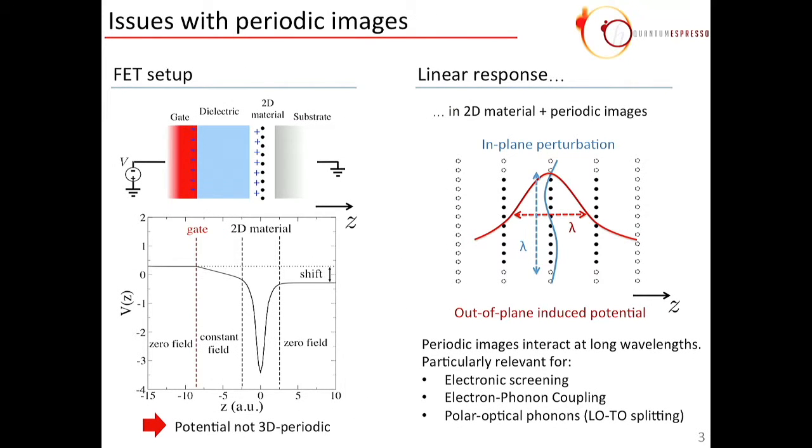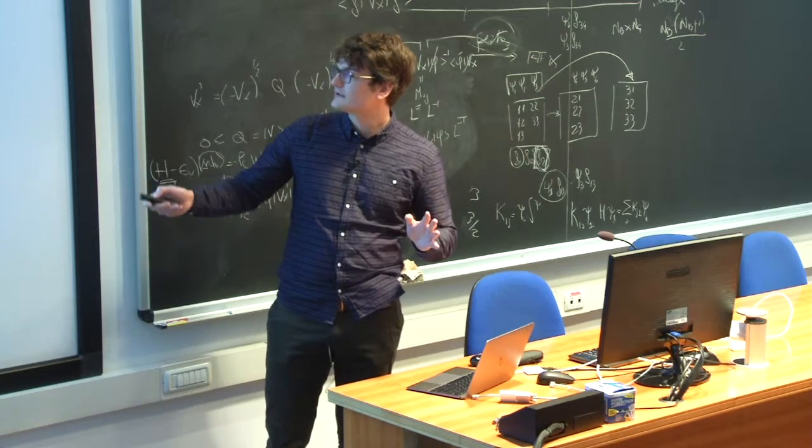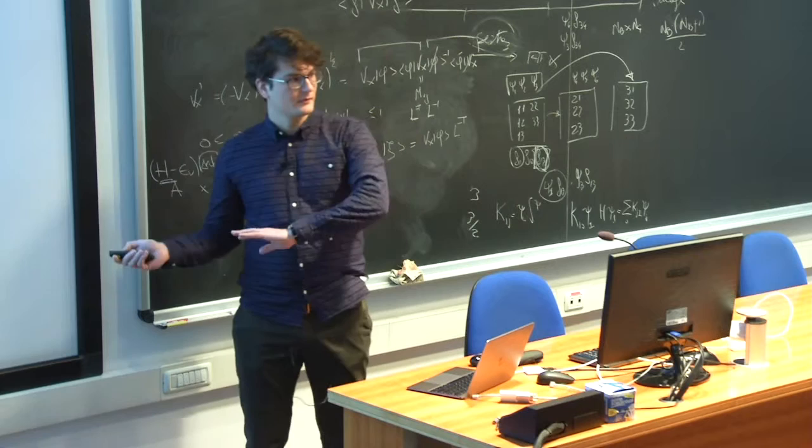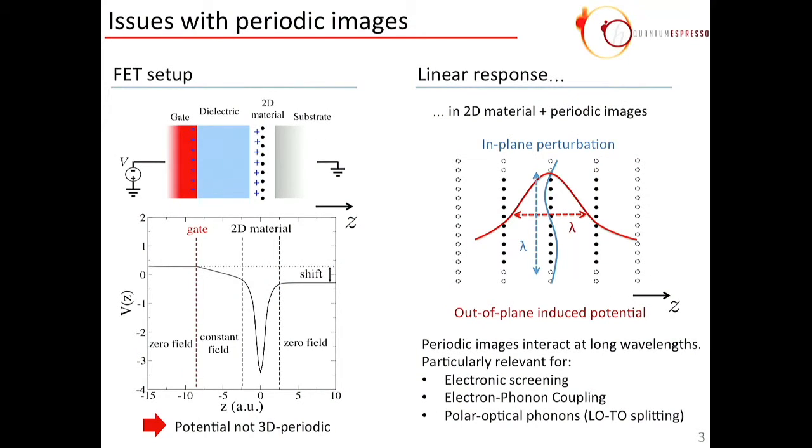The reason why Quantum Espresso has those issues is because, like many other codes, it works with 3D periodic boundary conditions, which means that you simulate the 2D material plus its periodic images. And this is a problem for the FET setup and the linear response. In the FET setup, the idea is to dope or charge the 2D material by placing a charged gate in front of it. What is special and interesting about this setup is that from the point of view of the 2D material, there is an asymmetric configuration in terms of electric fields.